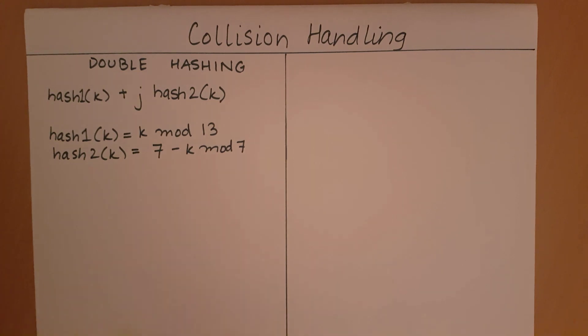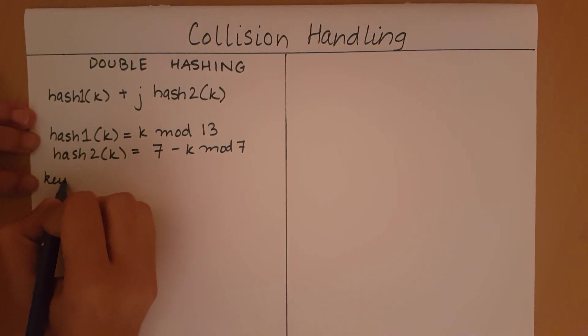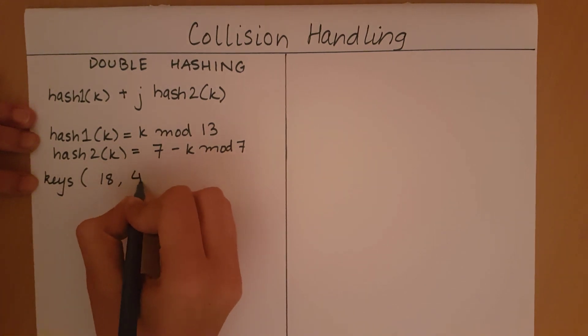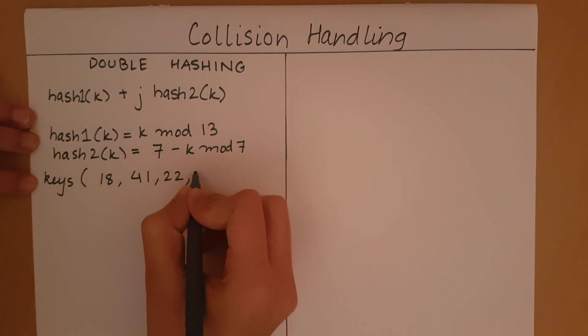Now, let's write down the keys. The keys I want to perform my hash function for are 18, 41, 22, and 44.